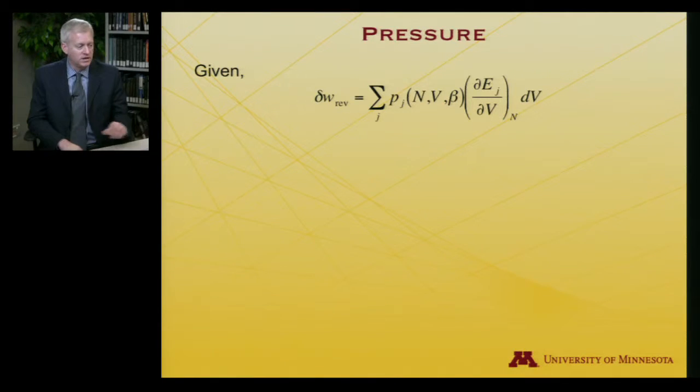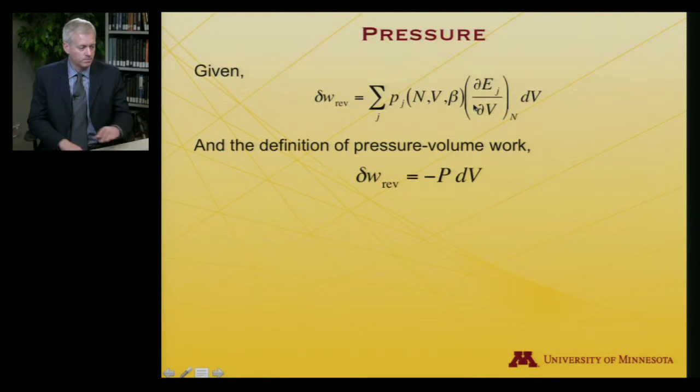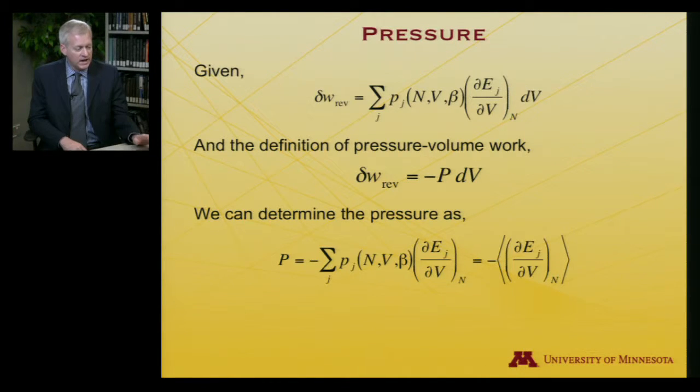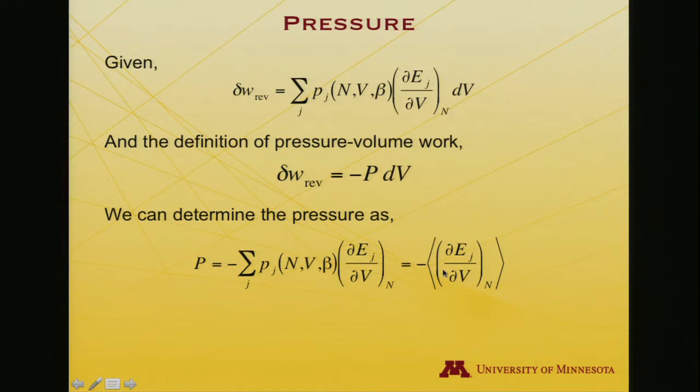So pressure then, given this relationship of work, differential work, is this probability times differential energy. And the more common differential work is just minus P dV. I'll get that the pressure is this expression here, preceding dV. It's the probability weighted, the ensemble weighted values of partial E, partial V. Or, if I want to compute pressure, it is minus partial derivative of energy with respect to volume, keeping the number of particles constant, averaged over the ensemble.